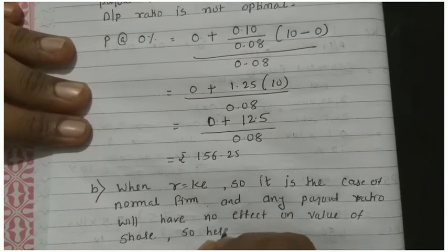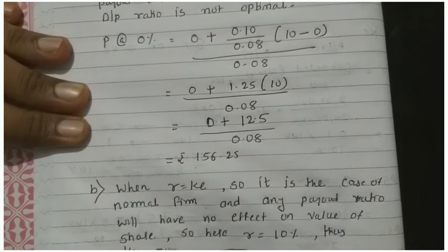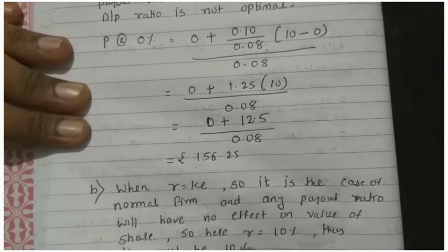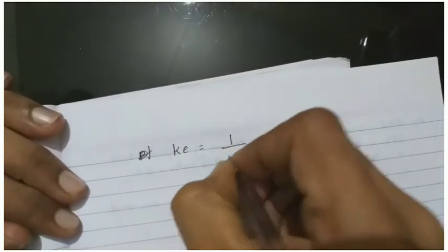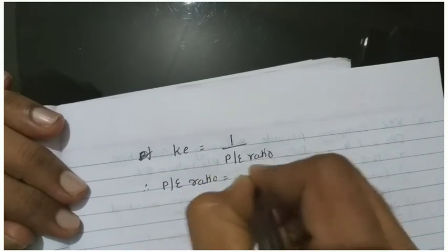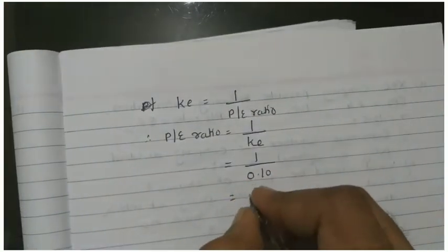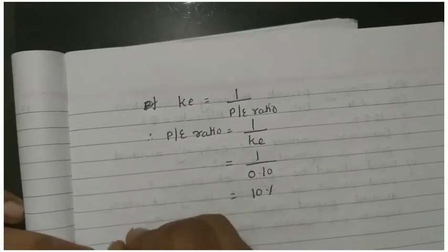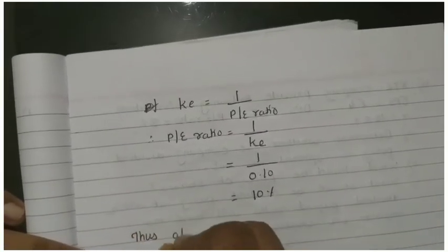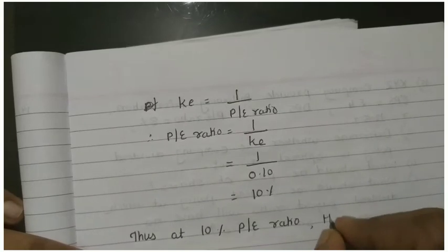So here, R given in sum is 10%. Thus KE must be, KE must be 10%. Now KE must be 10%. KE formula is 1 upon P/E ratio. Therefore P/E ratio is equal to 1 upon KE. So KE should be 0.10, that is 10%. So your P/E ratio will be 10. Thus at 10% price earning ratio, the dividend payout ratio will have no effect on value of share.